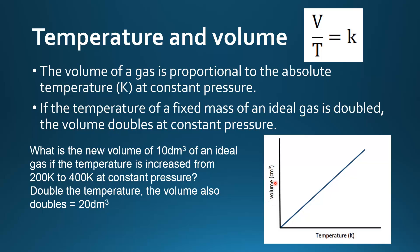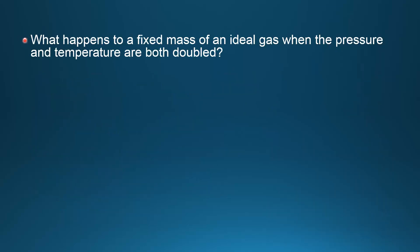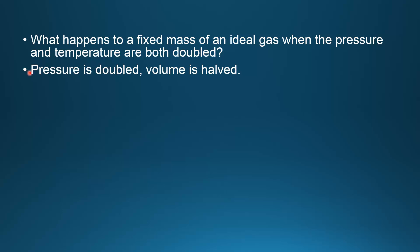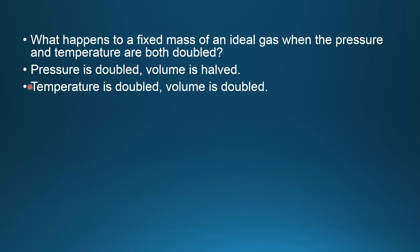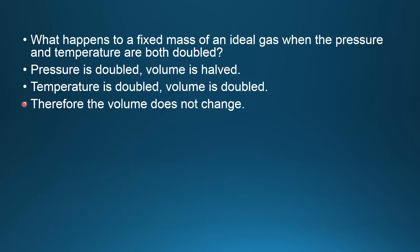If volume is plotted against temperature in Kelvin we get a linear graph, a straight line. Now let's try an example: what happens to a fixed mass of an ideal gas when the pressure and temperature are both doubled? The pressure is doubled so the volume is halved, and the temperature is doubled so the volume is doubled. We are halving and then doubling the volume, so therefore the volume does not change.